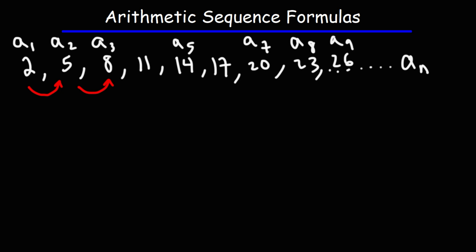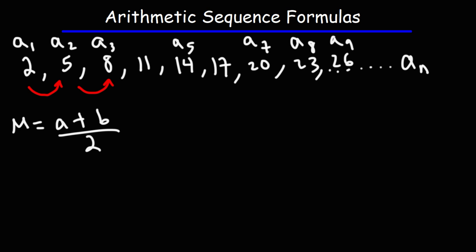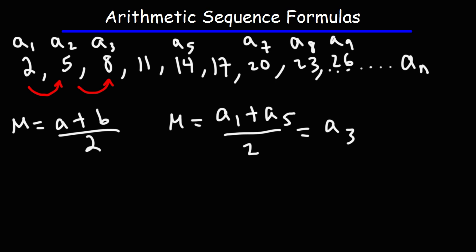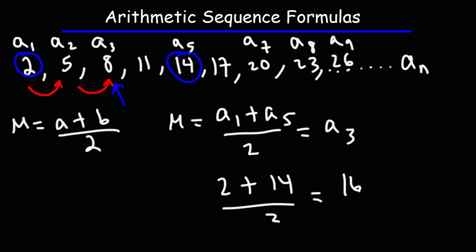The next formula is the arithmetic mean, which is basically the average of two numbers. In an arithmetic sequence, averaging the first and fifth terms gives you the middle term — the third term. The average of 1 and 5 is 3. So averaging 2 and 14 gives us (2 plus 14) divided by 2, which is 16 divided by 2, equals 8 — the value of the third term.